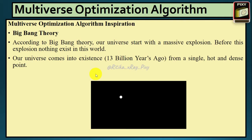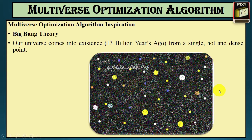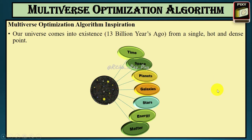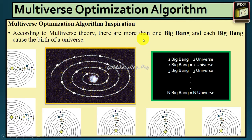According to multiverse theory, there are more than one Big Bang, and each Big Bang causes the birth of a universe. According to Big Bang theory, our universe started with a massive explosion. Before this explosion, nothing existed, and our universe came into existence 13 billion years ago from a single hot dense point. So one Big Bang means one universe, two Big Bangs means two universes — meaning we have N number of universes.